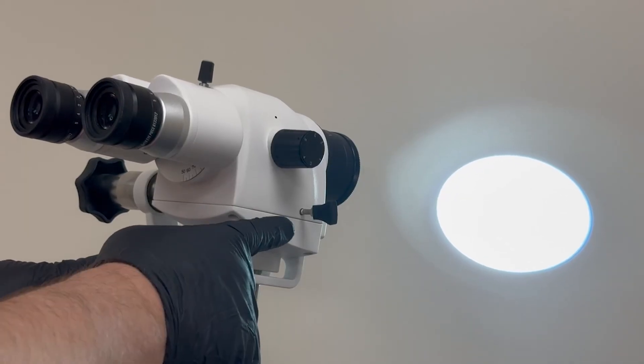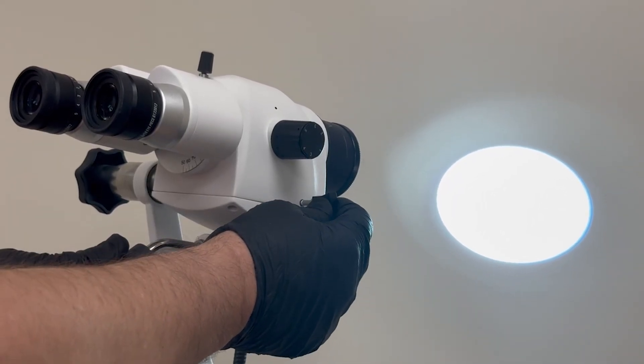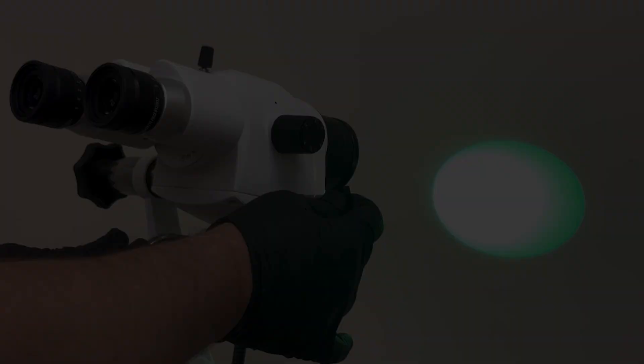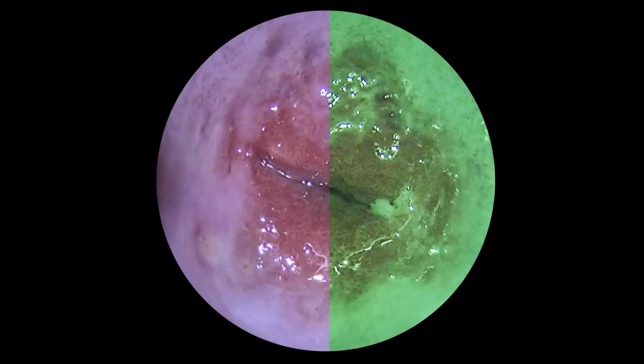All Siler Colposcopes are equipped with a green filter, integrated through a user-friendly push-pull mechanism. This improved contrast provides doctors with a clearer, more detailed view of the vascular structure.